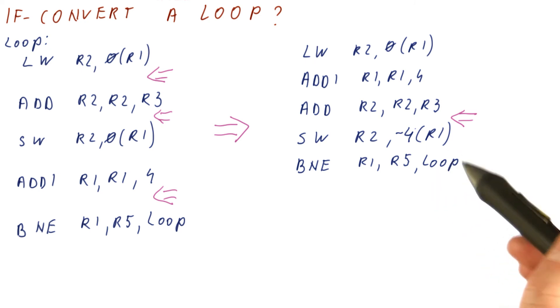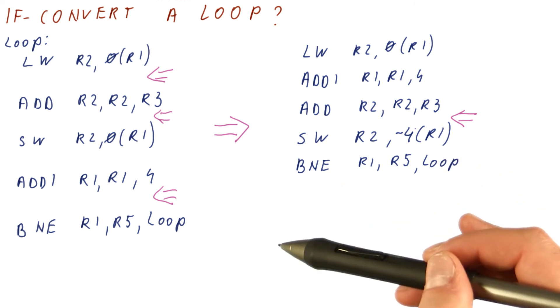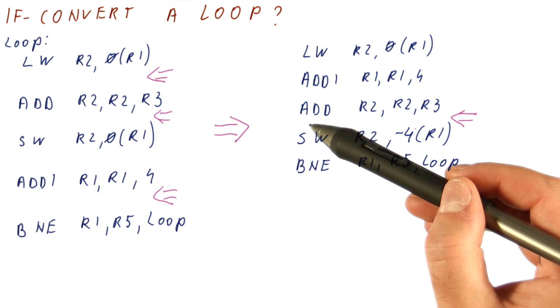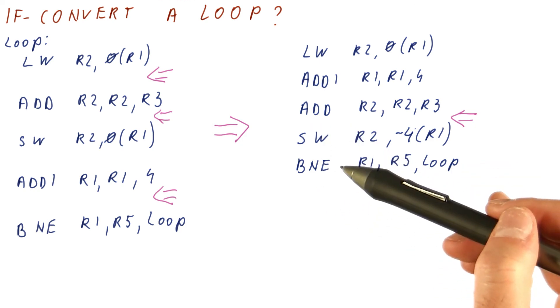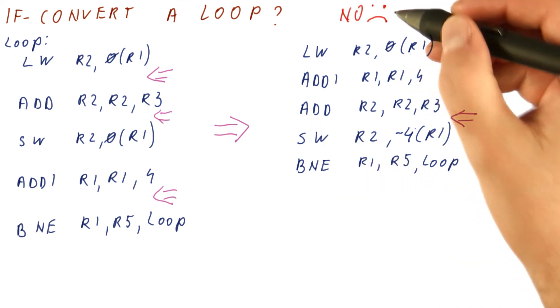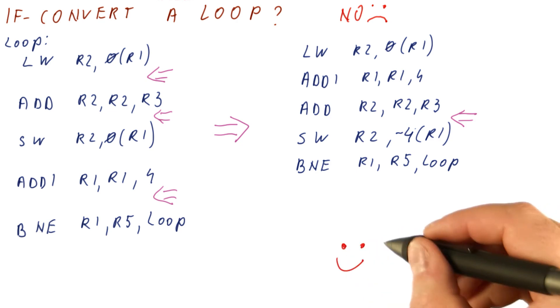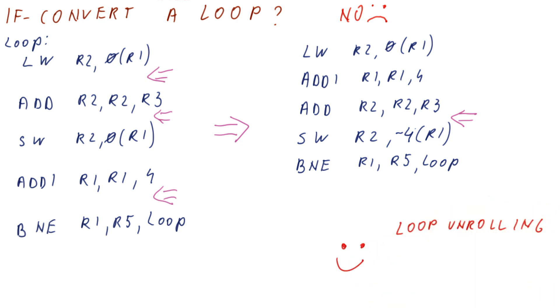So we want to do something about loops that is like if-conversion to allow us to find things in future iterations to move here, but without really doing if-conversion. So we cannot truly if-convert, but there is something else we can do. And that something will be called loop unrolling.